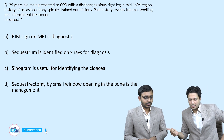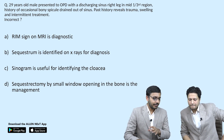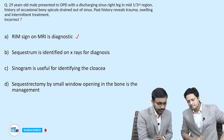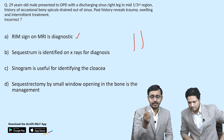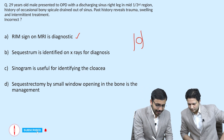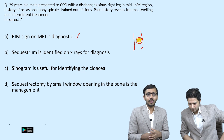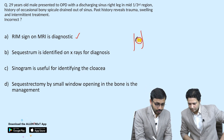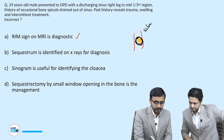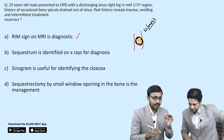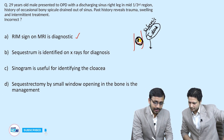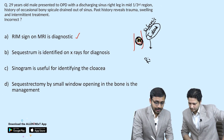Regarding option A — rim sign on MRI is diagnostic. This is a correct option. In chronic osteomyelitis, the center of the bone has dead bone surrounded by reactive sclerosis. On MRI, all sclerosis appears T2 dark. This T2 dark rim surrounding the dead bone in the center creates the rim sign.